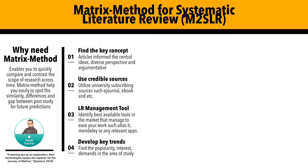There are four tips to ensure we can do our systematic literature review. First, find the key concepts that the article informs: the central ideas, diverse perspectives, and the argumentative approach. Second, use credible sources — utilize as much as possible the university-subscribed sources such as e-journals, e-books, and so on.